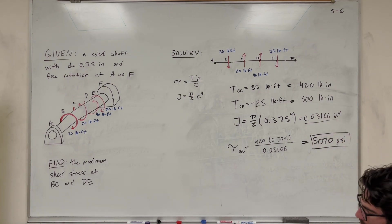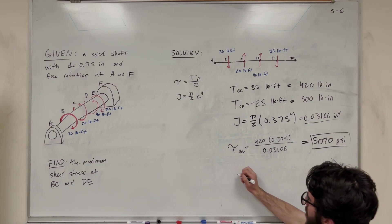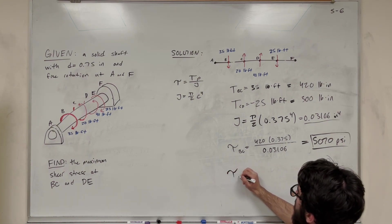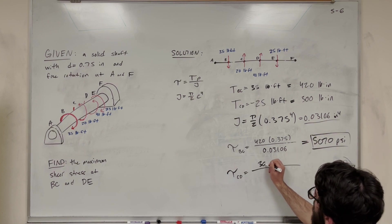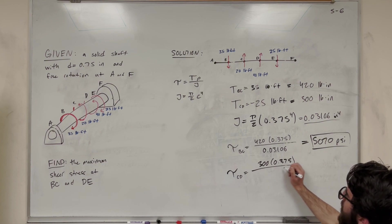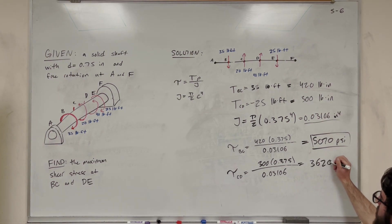Now let's find the shear stress in CD. We run into the same thing. We have that 300, same 0.375, over 0.03106. Do this, you get 3620 psi.